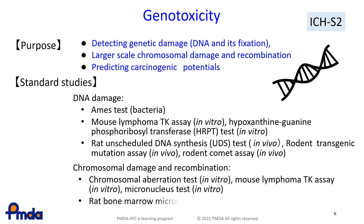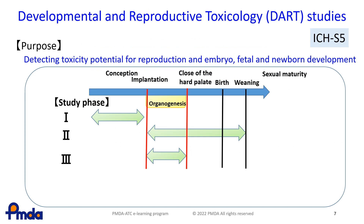To investigate the effects of test substances on chromosomal damage and recombination, chromosomal aberration tests, mouse lymphoma TK assays, and micronucleus tests are conducted in an in vitro system, and rat bone marrow micronucleus tests are used in an in vivo test system. This shows a summary of the developmental and reproductive toxicology, DART studies.